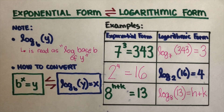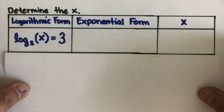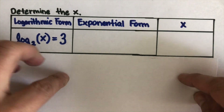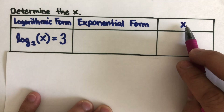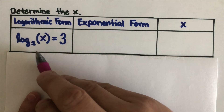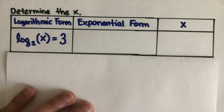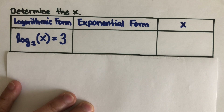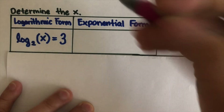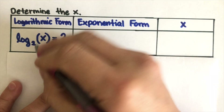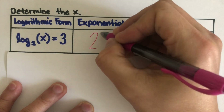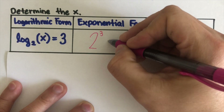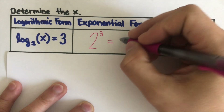Now, let's take some examples where we are going to solve for x. Let's take this first one. The first thing we're going to do in order to solve for x is to change this to its exponential form, because from there we can already determine it quickly. So, if you change it to exponential form, that would be 2 to the third power is equal to x.